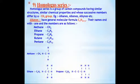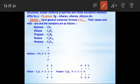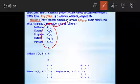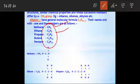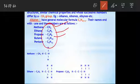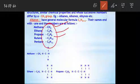For example, one series we have is: CH4, then methane, ethane, propane, butane, pentane. That is CH4, C2H6, C3H8, C4H10, C5H12. This is an example for homologous series. But why is this an example for homologous series? That is the question.